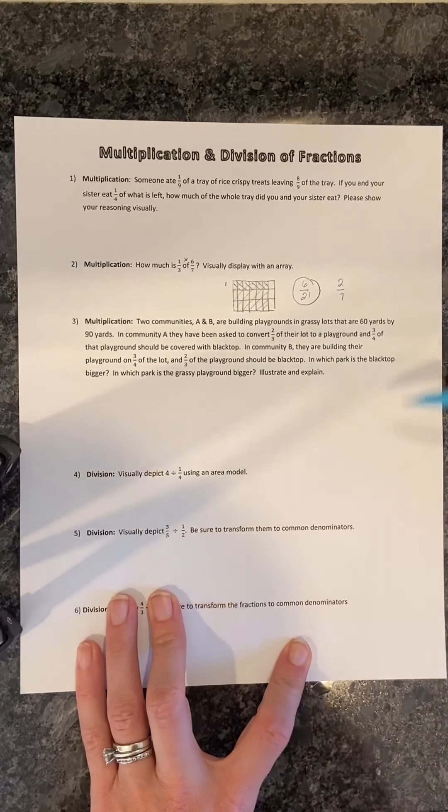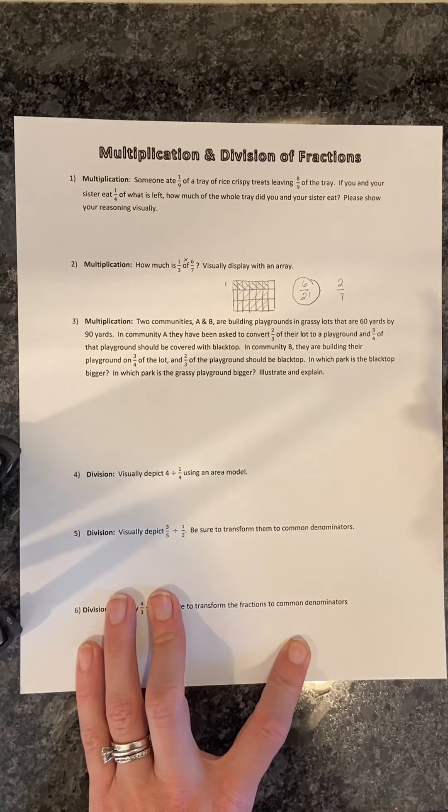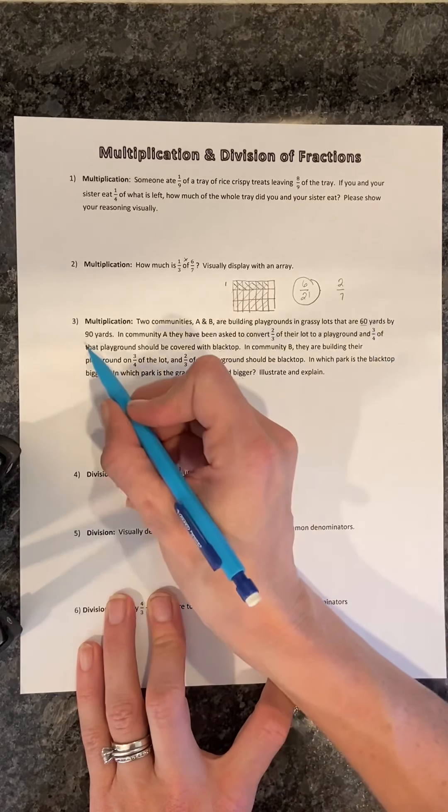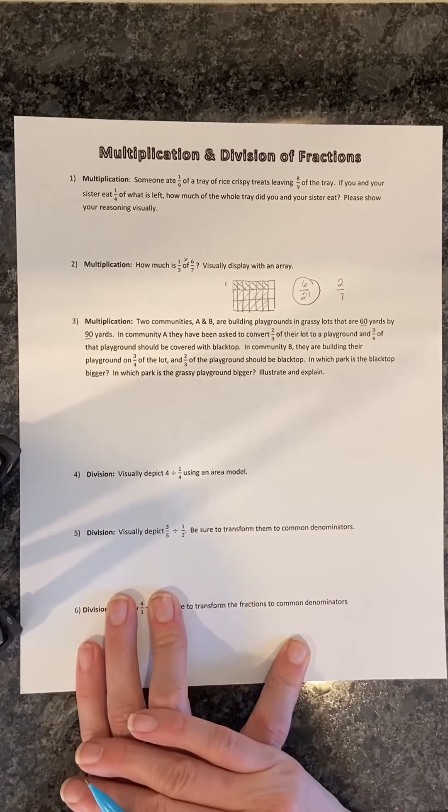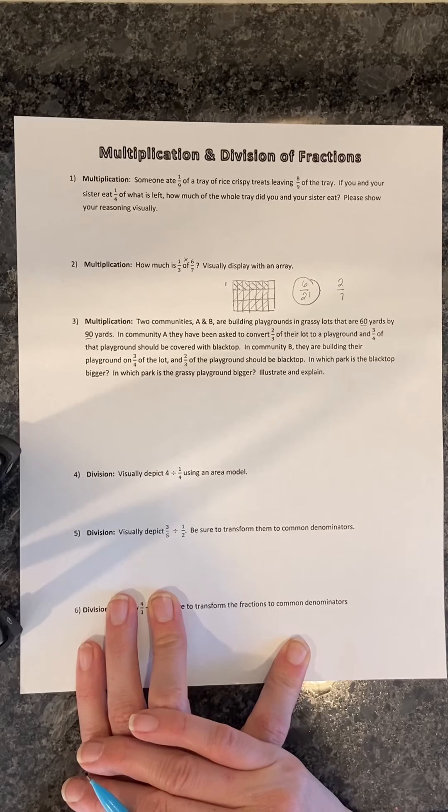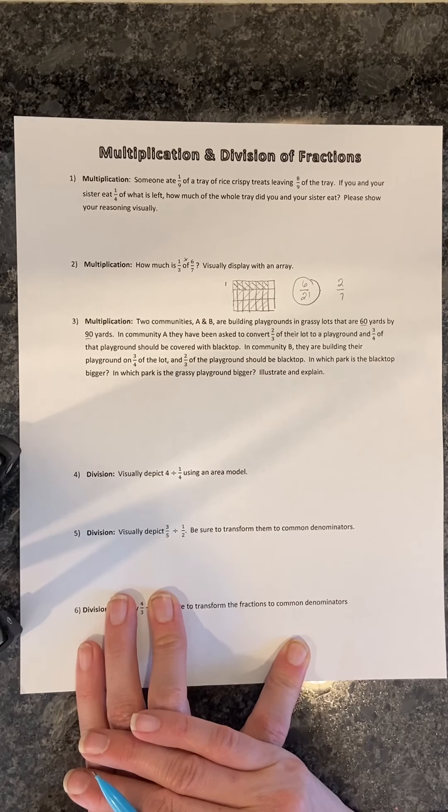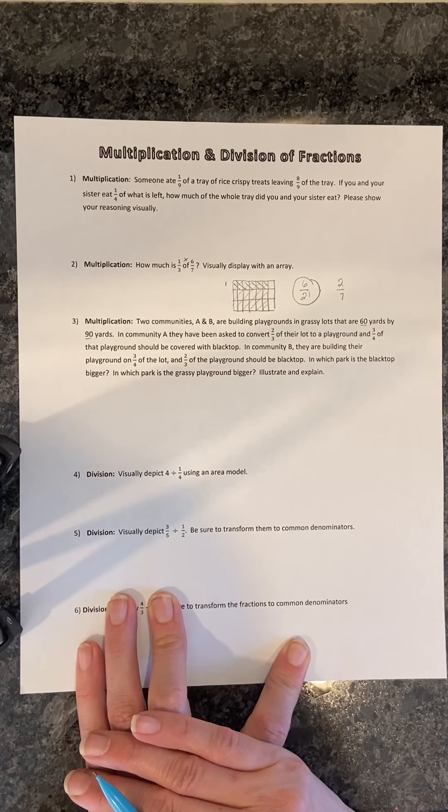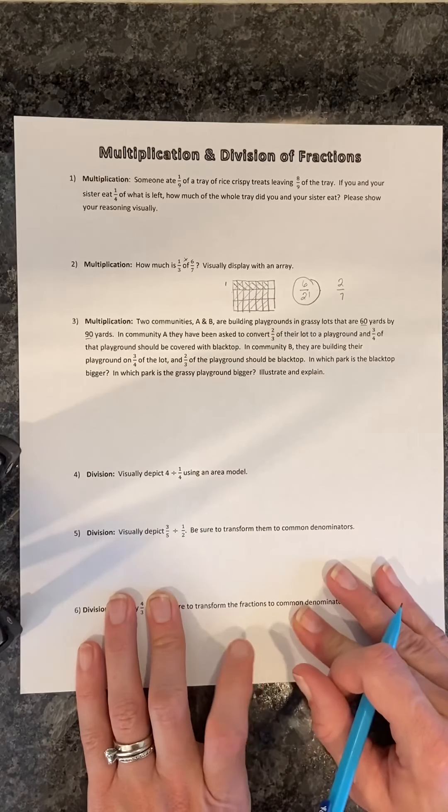The second one, we have this multiplication problem. We see from the get-go that both lots are the same exact size. We're told that in community A, two-thirds of their lot is a playground, and three-fourths of that is blacktop. In community B, they are converting three-fourths of the lot to a playground, and of that, two-thirds will be blacktop. So the order is reversed for both of these.